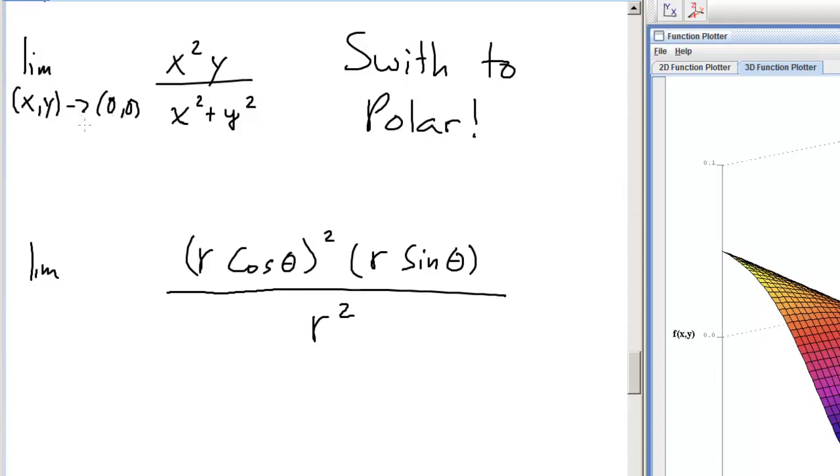Remember, we want to get closer and closer and closer to the origin. We want our distance, our distance from the origin to get smaller and smaller and smaller. In polar coordinates, distance from the origin has nothing to do with theta. Distance from the origin has everything to do with radius.